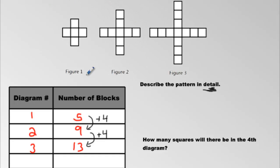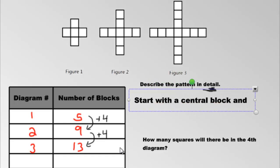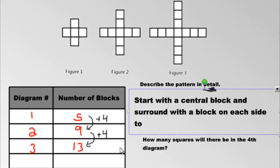So that's what we're gonna write in the detail part. I'm gonna type this out as my writing is a little bit challenged so I will type it out, you write it out though. So let's say start with a central block and surround it with a block on each side to make a plus sign. I'm gonna shrink this down and make some room.